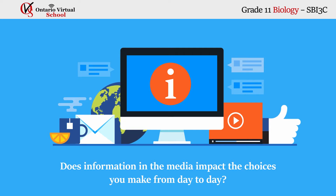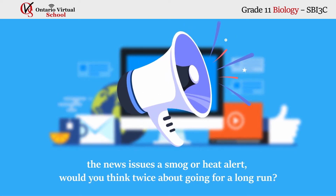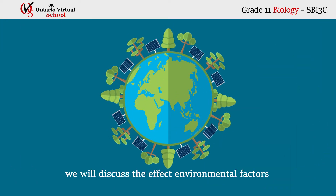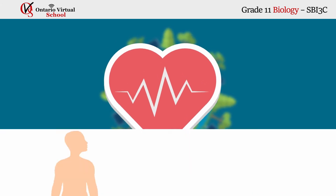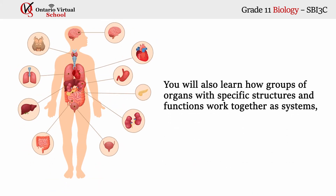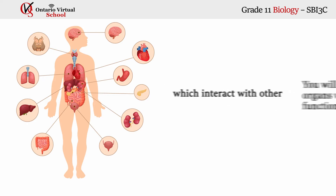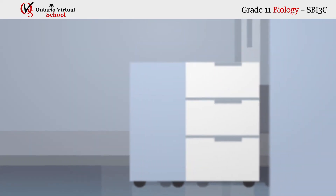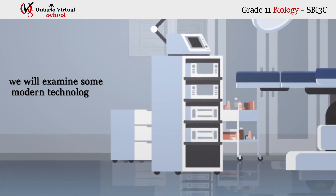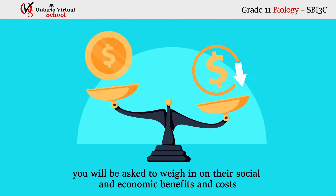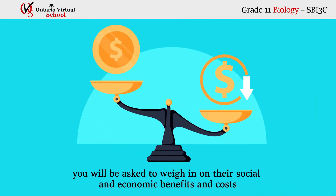Unit 4: Anatomy of Mammals. Does information in the media impact the choices you make from day to day? Say for example the news issues a smog or heat alert — would you think twice about going for a long run? In this unit we will discuss the effect environmental factors can have on human health. You will also learn how groups of organs with specific structures and functions work together as systems which interact with other systems in the body. Finally, we will examine some modern technologies being used to maintain human health, and you will be asked to weigh in on their social and economic benefits and costs.